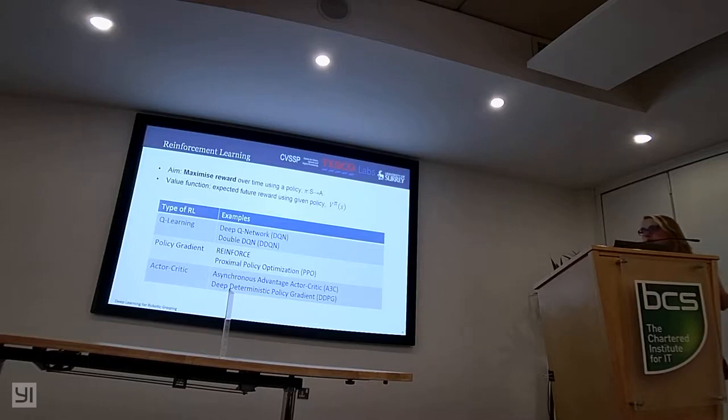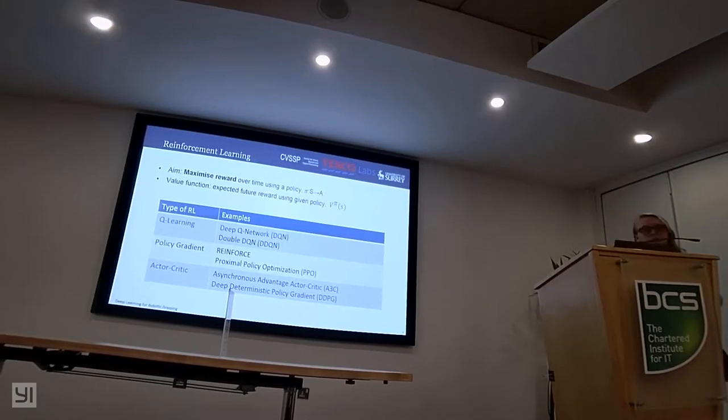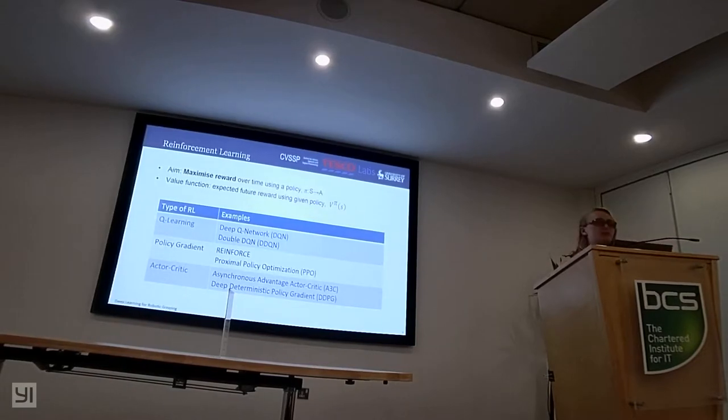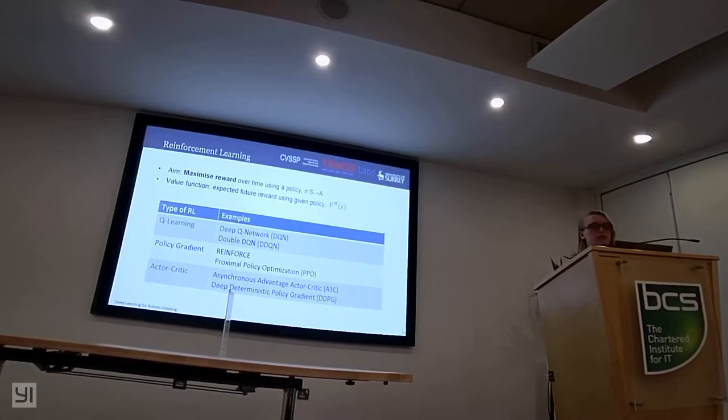On the other side, there's policy-based networks using things like policy gradient methods, which instead of using the value function, we directly estimate the policy and then use the gradient of the reward to update it. And then as a combination of these two, we get actor-critic methods, which both use estimates of the value function and the policy in order to learn the system.